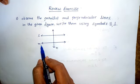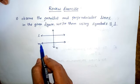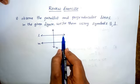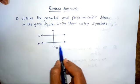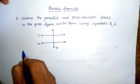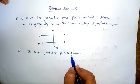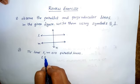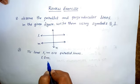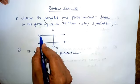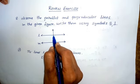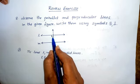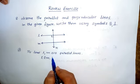Observe lines L and M — these two lines do not cross each other, so they are parallel lines. Lines L and M are parallel lines, written as L ∥ M. Next, observe lines L and N — these two lines meet at a point where a right angle is formed, so L and N are perpendicular lines.